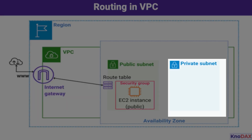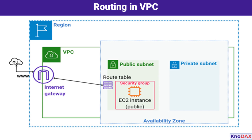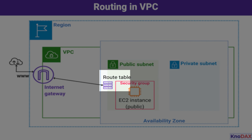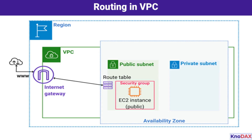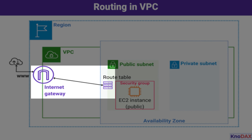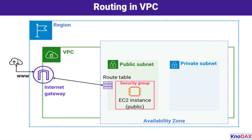Moving to the private subnet, shown in blue — this subnet is designed to be isolated from direct Internet access. Its route table doesn't include any routes pointing to the Internet Gateway, making it a perfect choice for hosting sensitive resources such as databases or internal applications that you want to keep private. Routing comes down to route tables, which determine where traffic is sent. The route table for the public subnet directs Internet-bound traffic to the Internet Gateway, while the private subnet's route table lacks such an entry, ensuring traffic remains confined within the VPC unless explicitly configured otherwise.